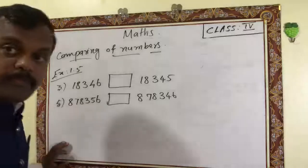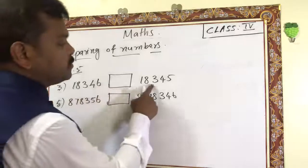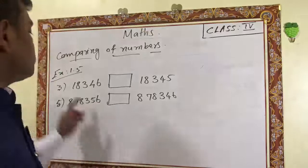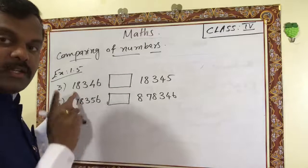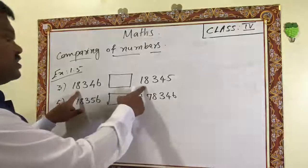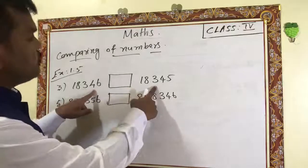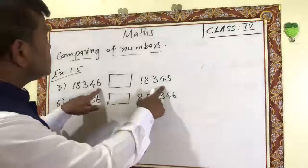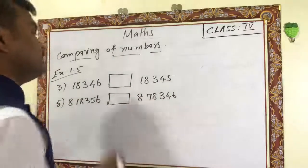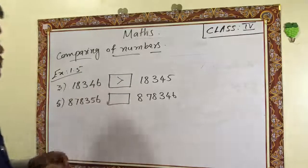First check the number of digits — both have six digits. Check the leftmost digit: one and one, same. Check next: eight and eight, same. Check next: three and three, same. Check next: four and four, same. Then six versus five — six is greater. So 8,78,356 is the greater number; mark the greater-than symbol.